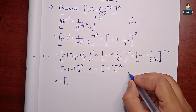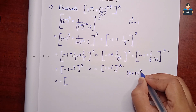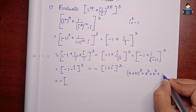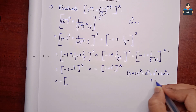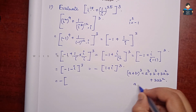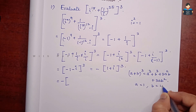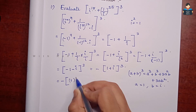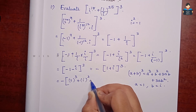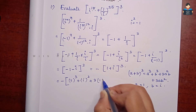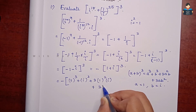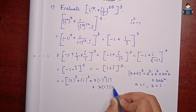The (a plus b) whole cube formula is: a cube plus b cube plus 3a square b plus 3ab square. Here a is 1 and b is i. So substituting, we get: 1 cube plus i cube plus 3 times a square into i plus 3 into 1 into i square.